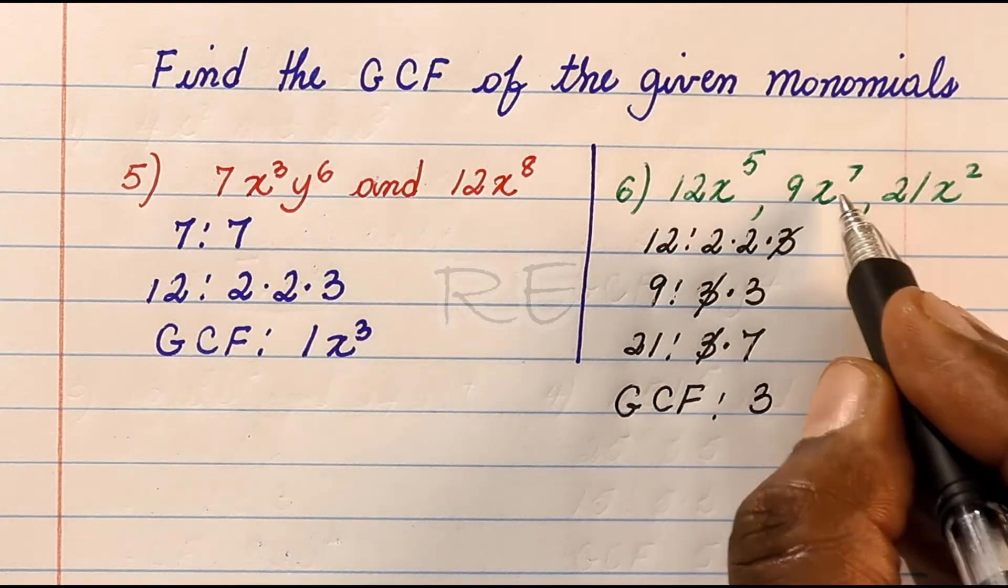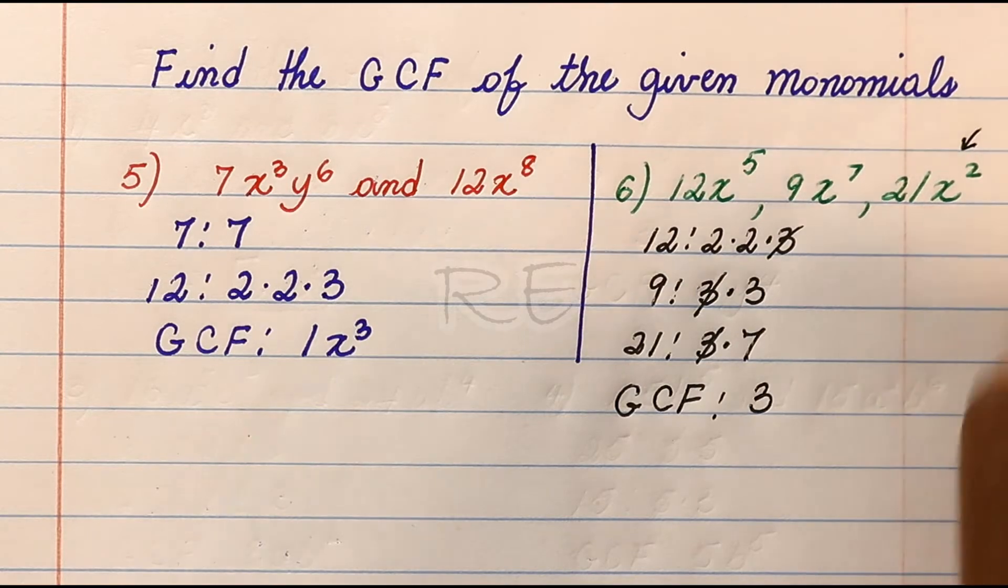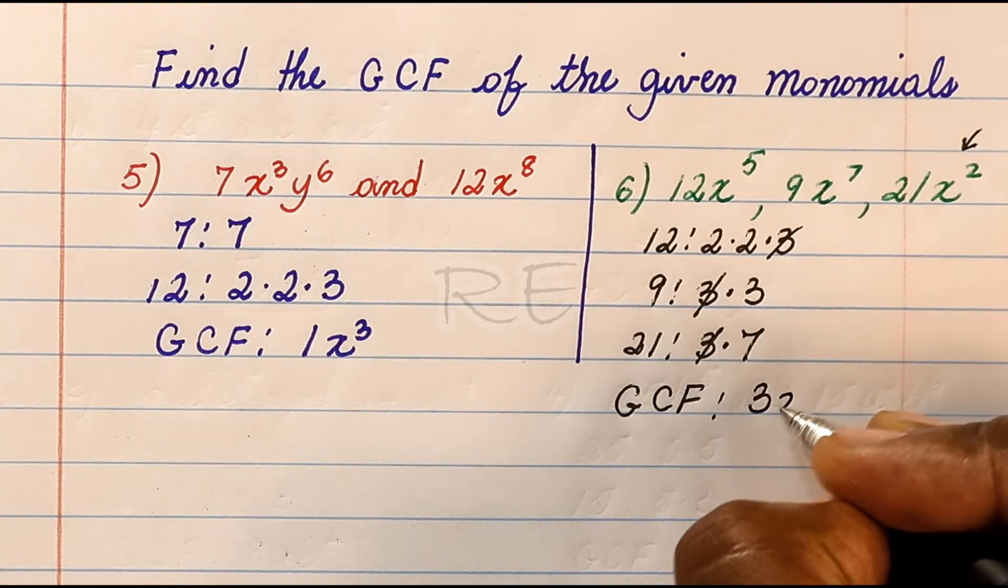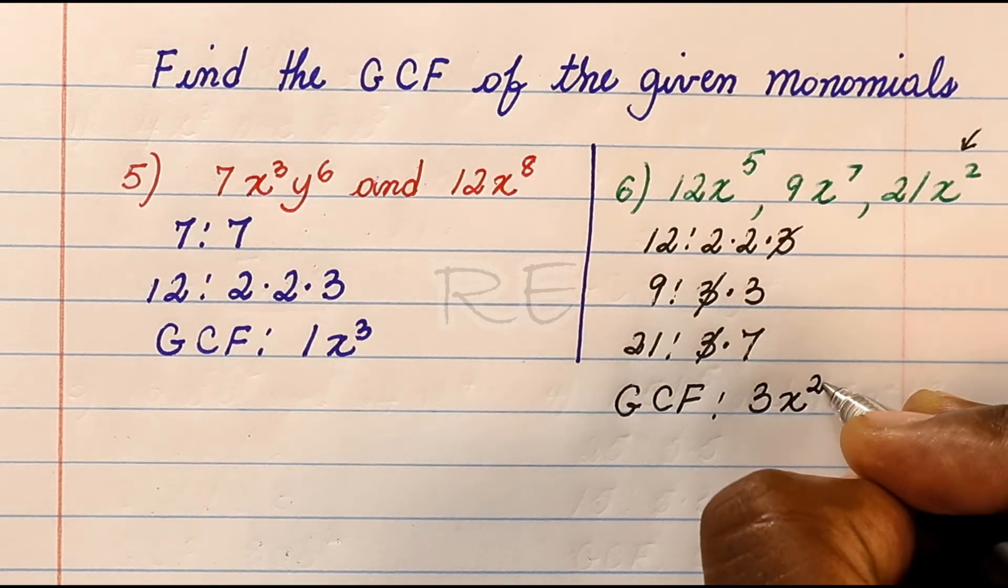Now x to the fifth, x to the seventh, and x to the second. X to the second is the lowest number.